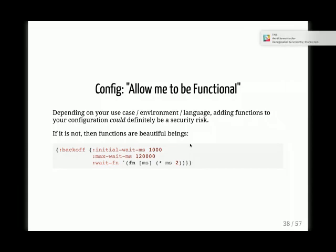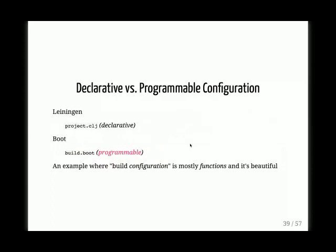Certain environments or management will not allow you to do that. But I think the configuration approach should allow to be functional — it allows you to be a lot more flexible. One example where I don't see any significant security risk is Boot. You can call it your build configuration in a way — it configures your build infrastructure, but it's completely programmable. There's some data, but it's mostly functions and tasks. And it's beautiful — it empowers you to do a lot of things.